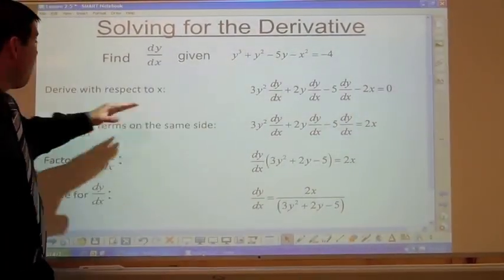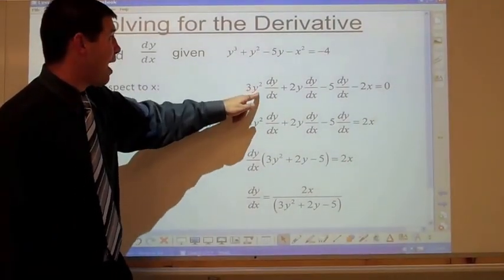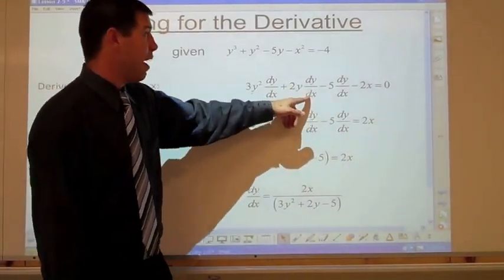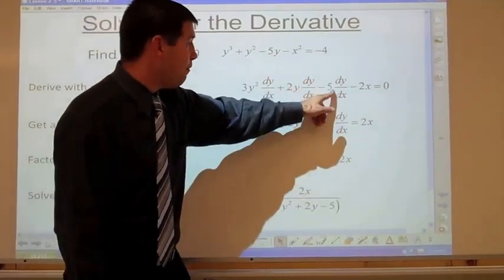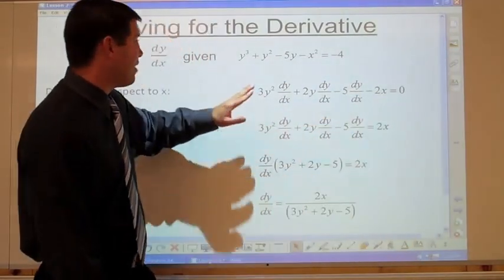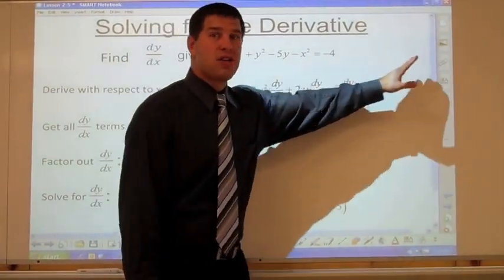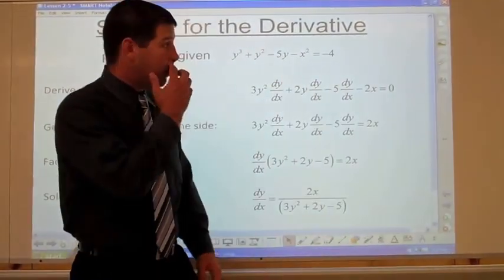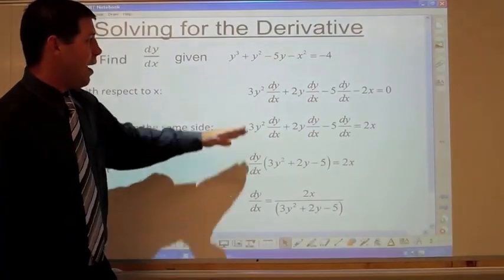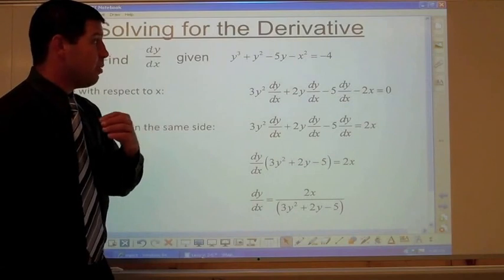To derive this, we start by deriving each term with respect to x. Deriving y cubed gives 3y squared — we derived a y term, so we need a dy/dx. Plus 2y dy/dx. Minus 5 dy/dx. Minus 2x, just a normal x term. Equals 0, since the derivative of a constant is 0.